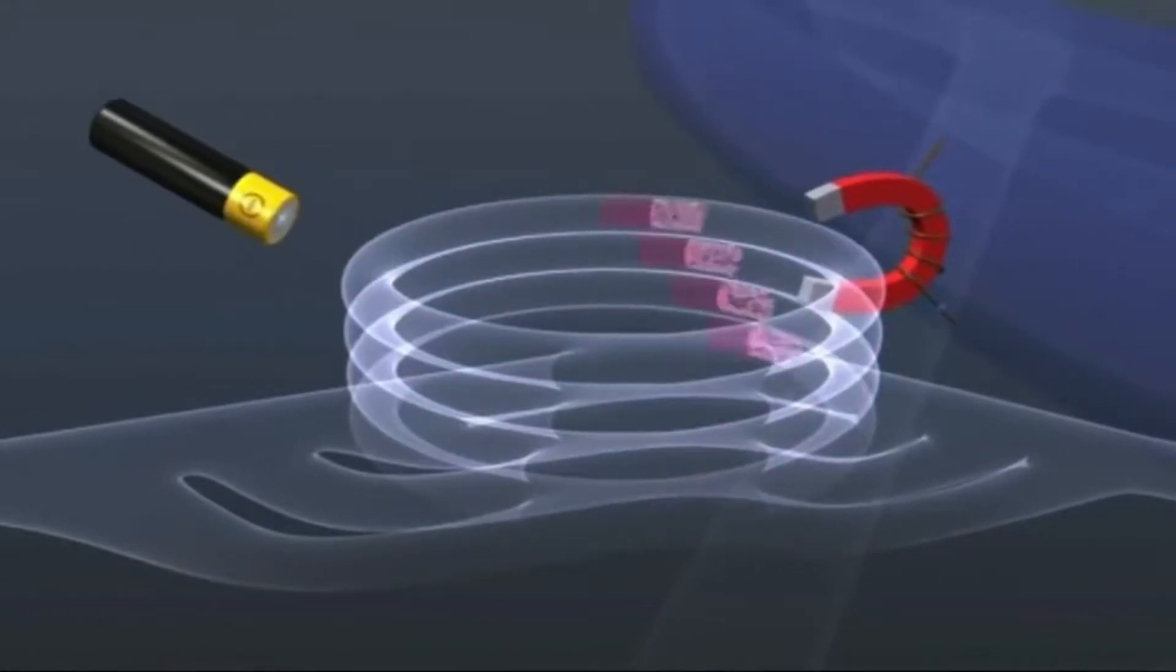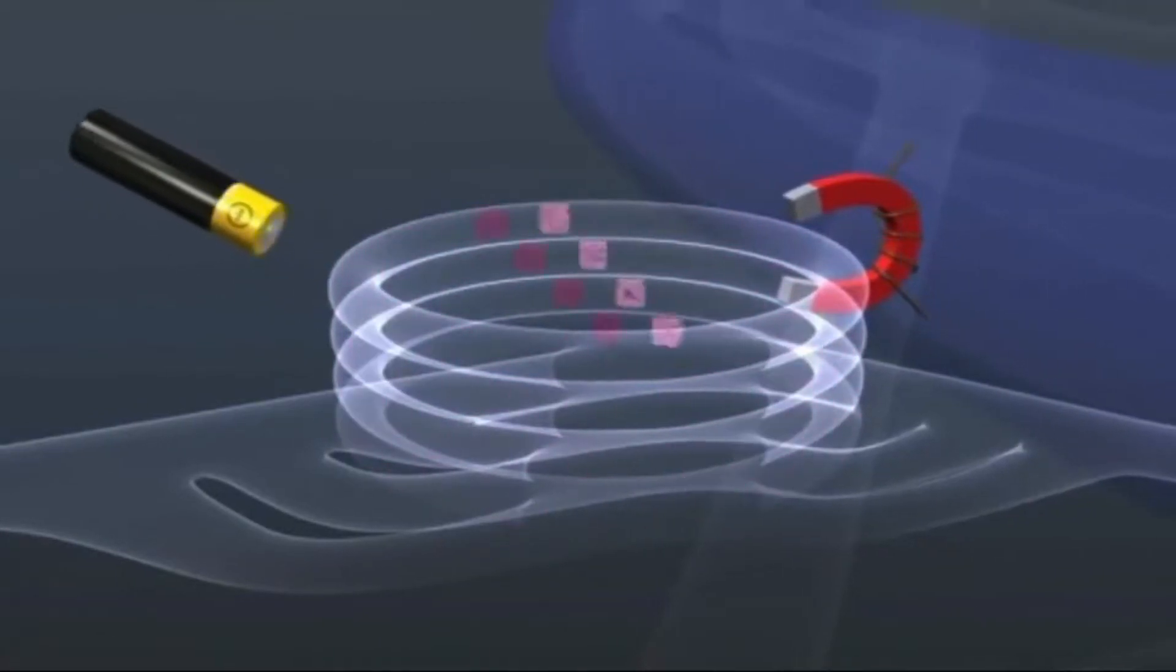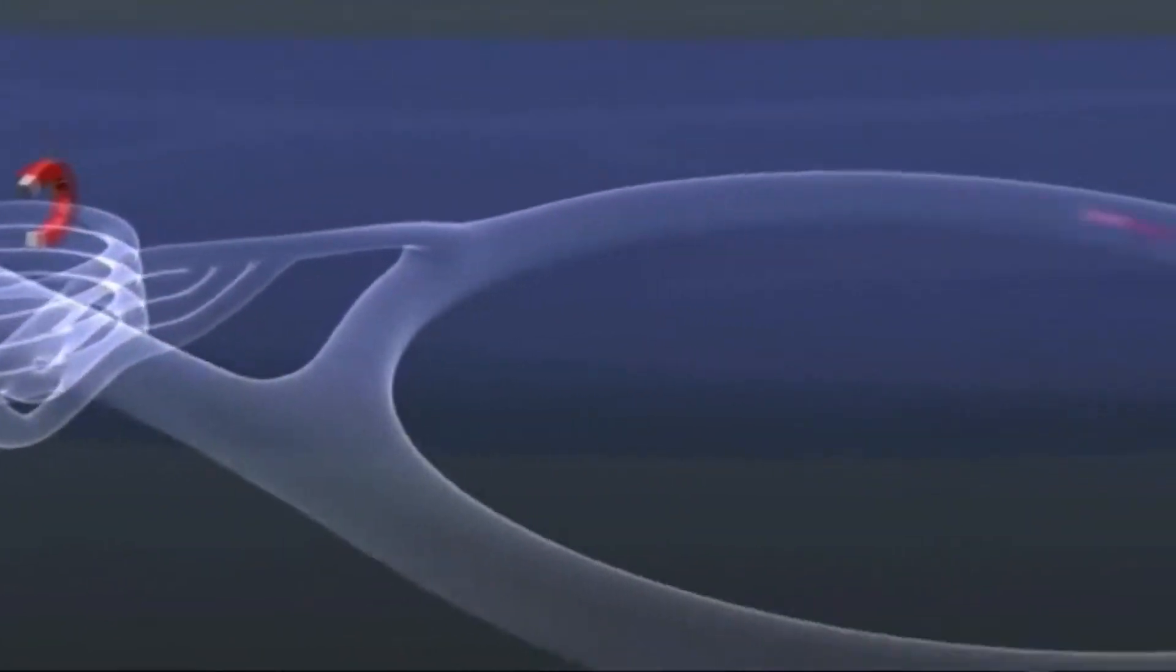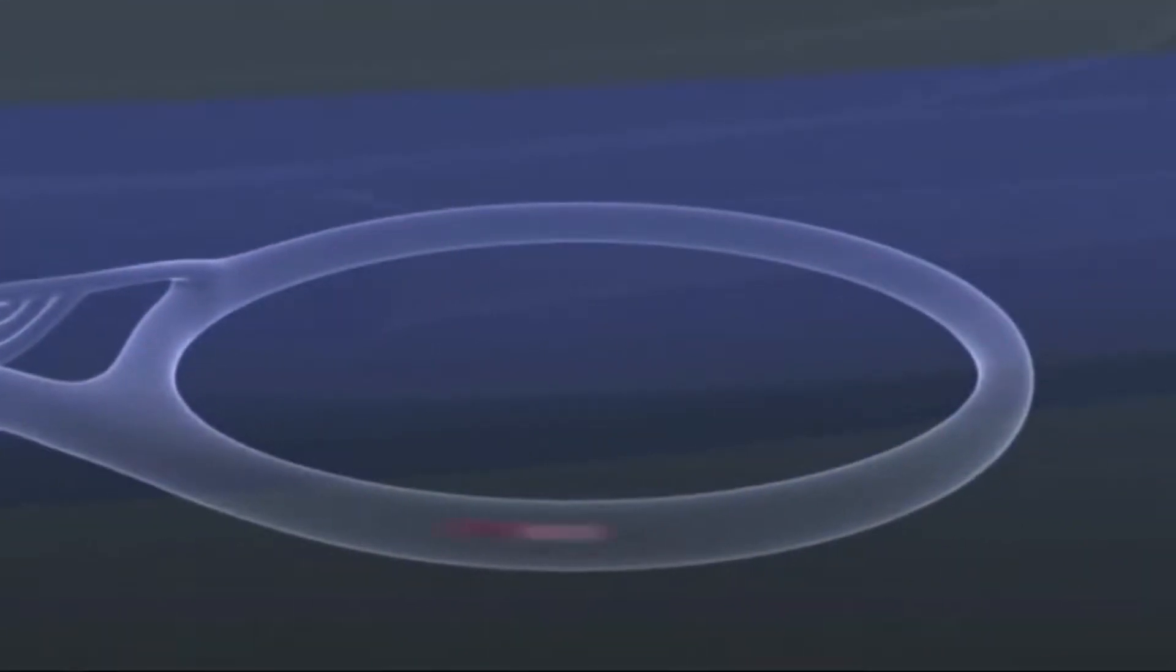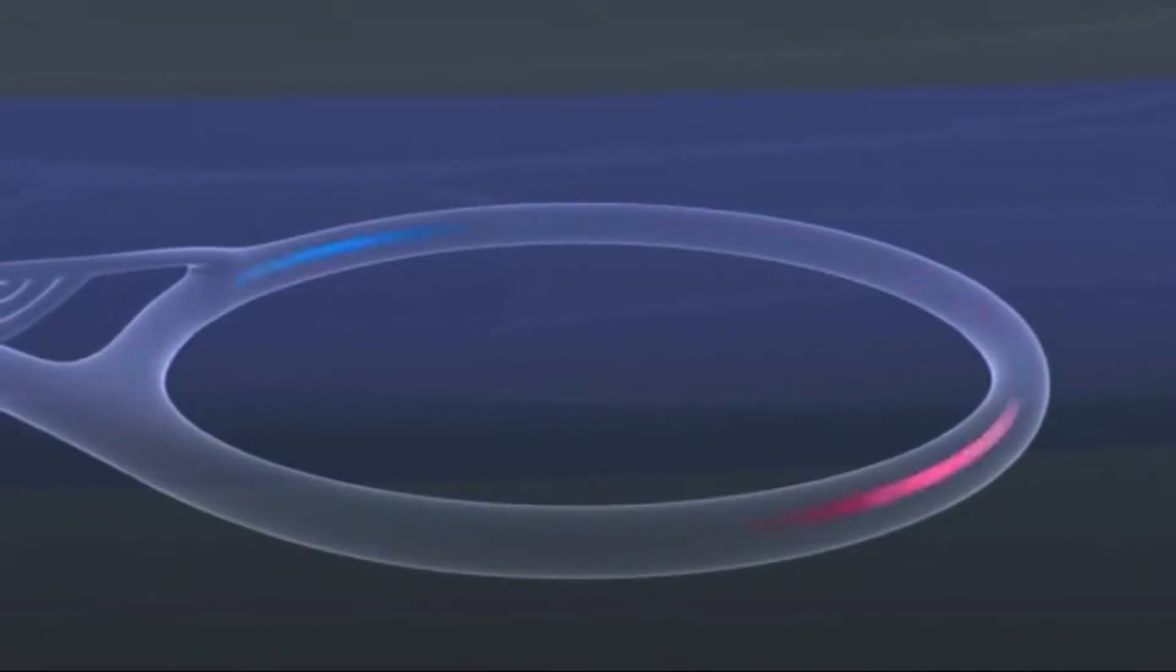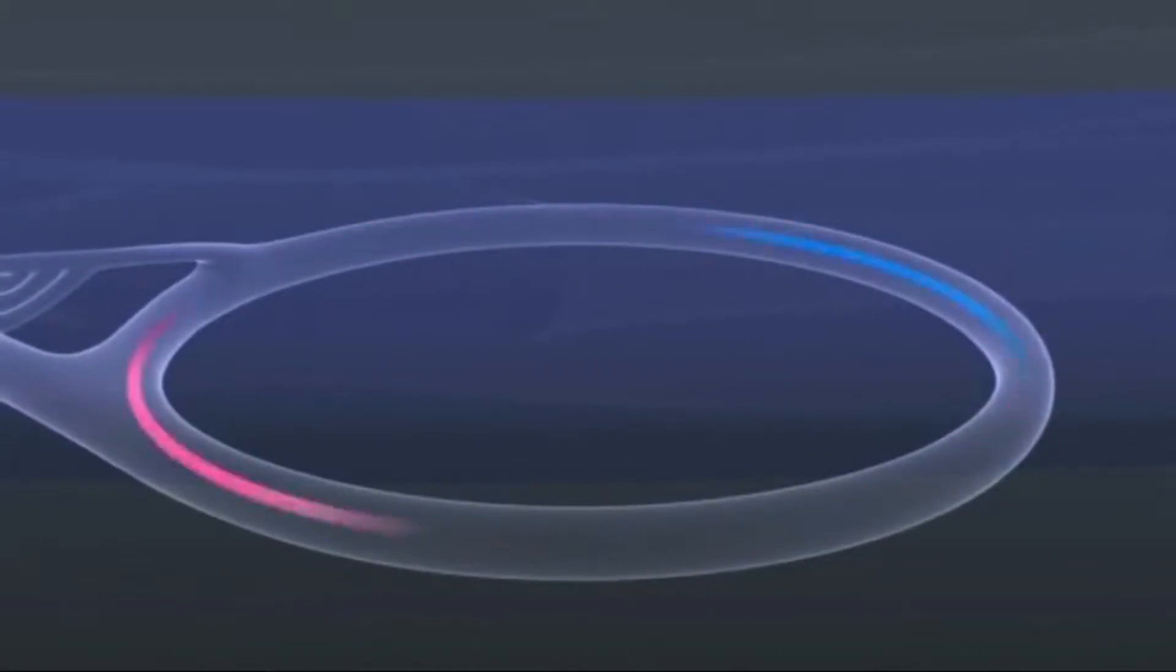Just prior to the collision, another type of magnet is used to squeeze the particles closer together to increase the chances of collisions. The particles are so tiny that the task of making them collide is akin to firing two needles 10 kilometers apart with such precision that they meet halfway.